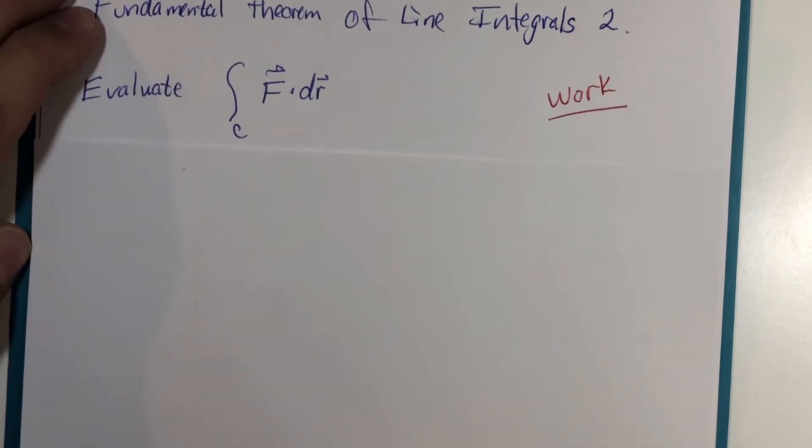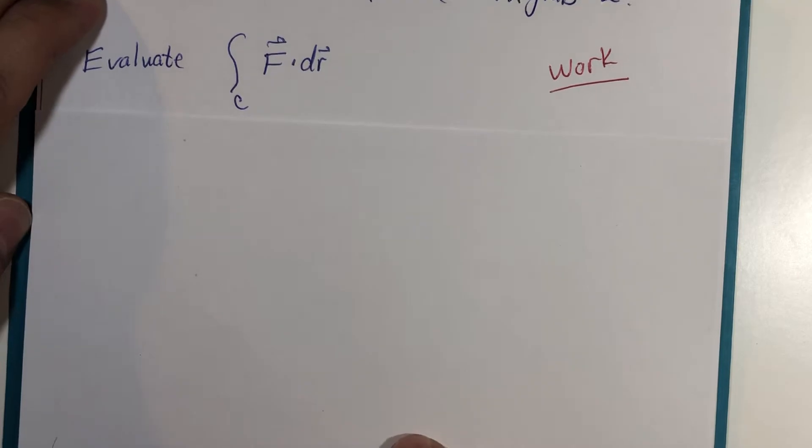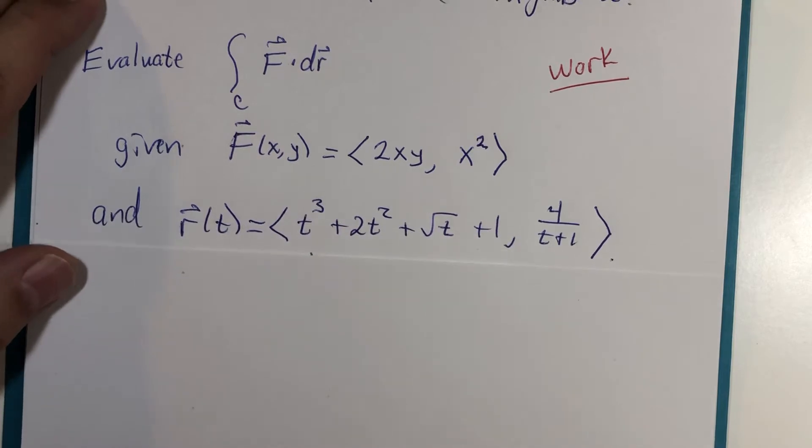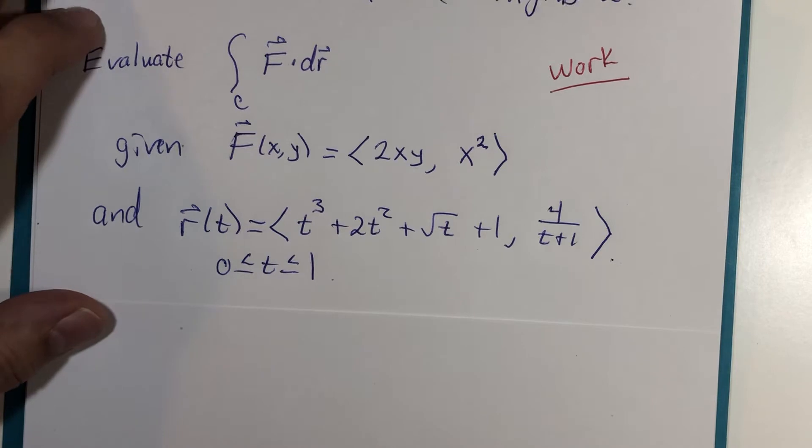And as we go through the given again, let's suppose we don't know that it's the fundamental theorem, and we're given a vector field, and then we're given a curve in vector form on a time interval from 0 to 1.